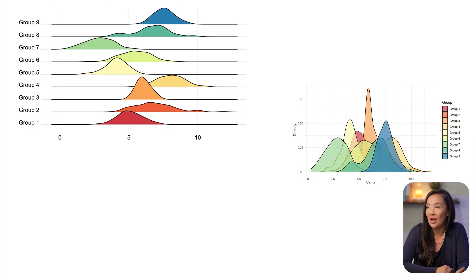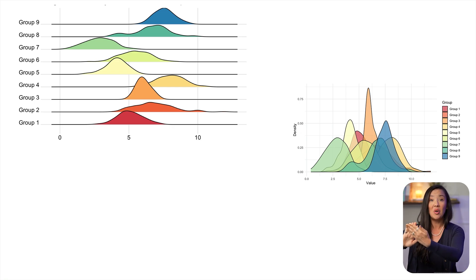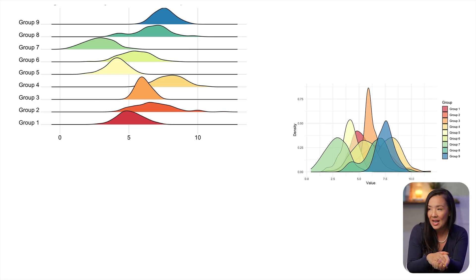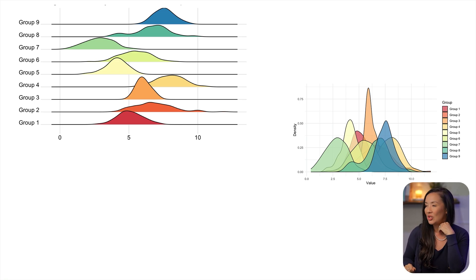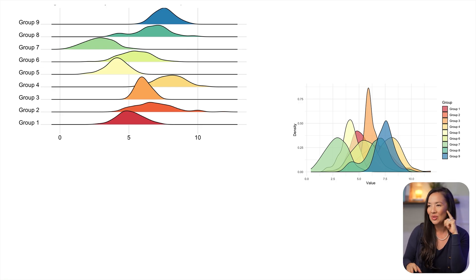Here we have an example of a ridgeline plot, which takes the exact same densities but stacks them one on top of each other so you can see each one more fully. There's still some overlap and a little bit of occlusion between groups three and four, but this allows you to control the amount of overlap and easily distinguish the different groups. With the first visualization you'd have to find the color in the legend, but with a ridgeline plot each line has a different group label so you know which group you're looking at.